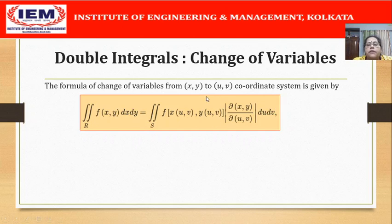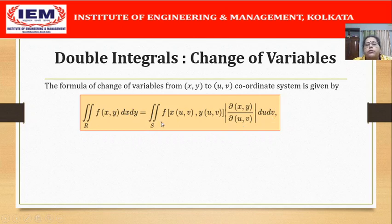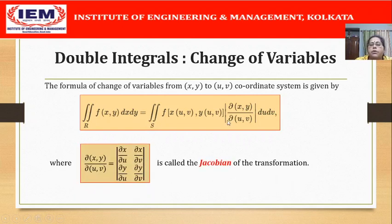The formula is: the double integral of f(x, y) dx dy over the region R is given by the double integral of f(x(u,v), y(u,v)) times the modulus of del(x,y)/del(u,v) du dv over the region S, where del(x,y)/del(u,v) is called the Jacobian of the transformation.